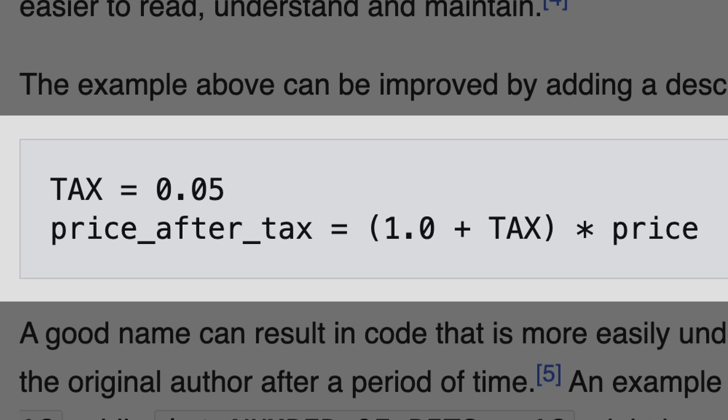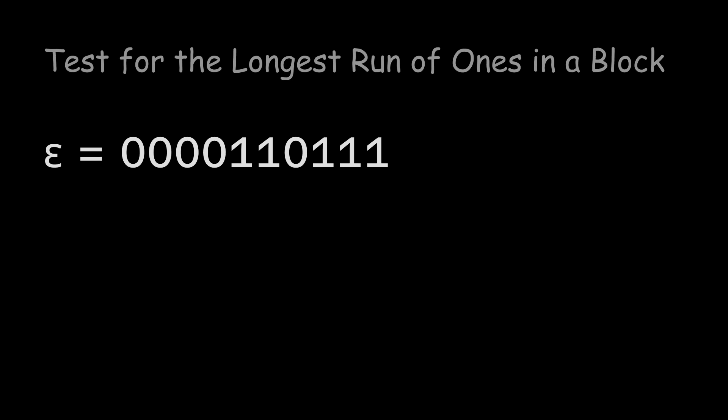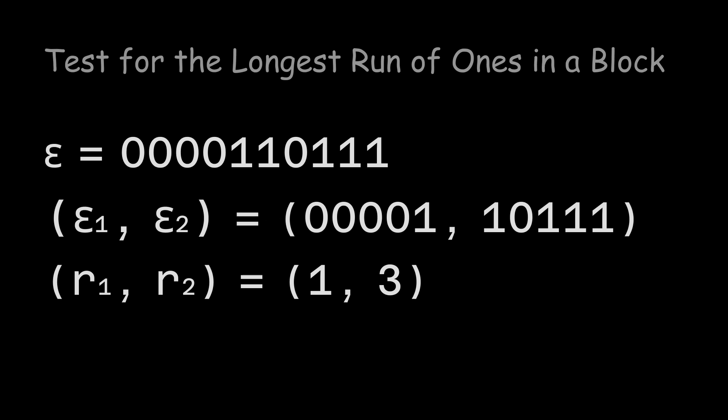If you want more examples of magic numbers, the fourth test is the test for the longest run of ones in a block. We split our random string into two blocks, then calculate the longest run of ones within each block. The longest runs follow a certain statistical distribution.